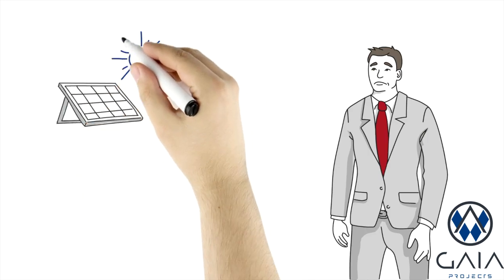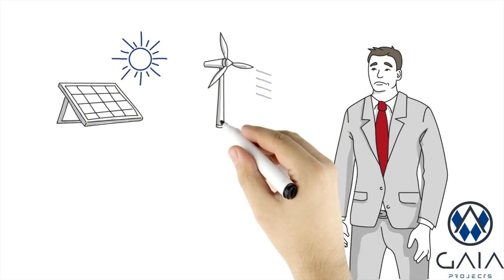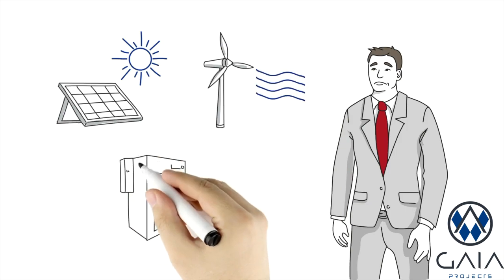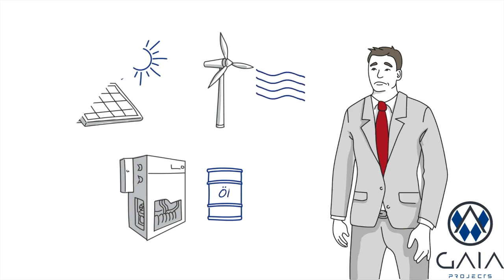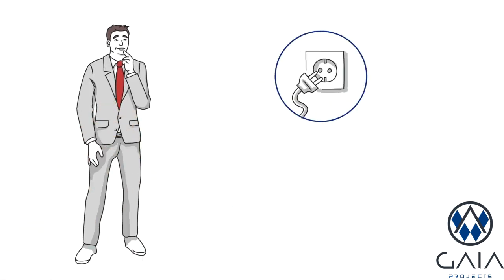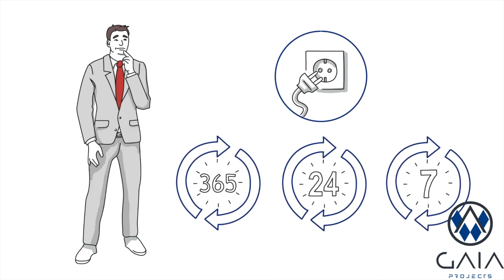That is understandable because photovoltaic systems only provide electricity when the sun is shining, and wind turbines only when the wind is blowing. Combined heat and power plants require expensive fuels, however you require a constant power supply, 24 hours a day, 365 days a year.